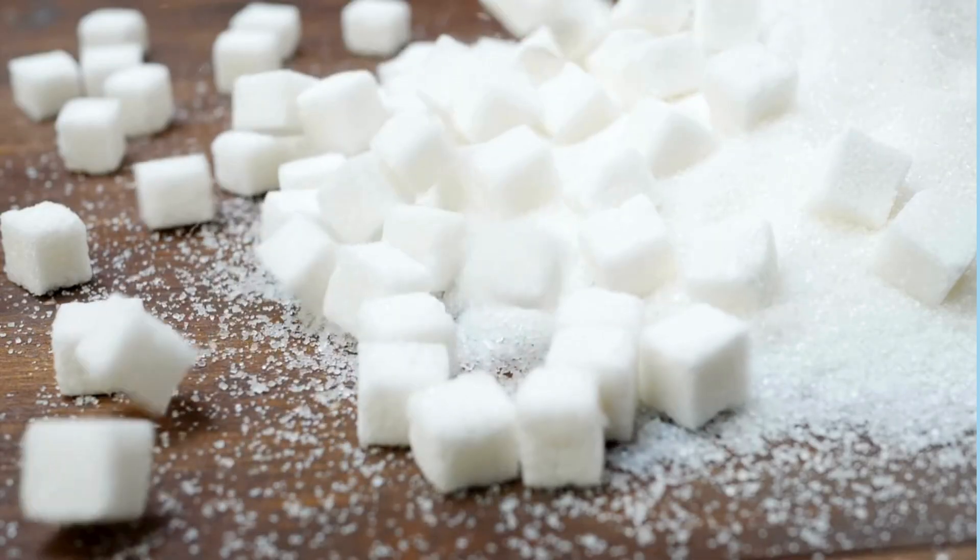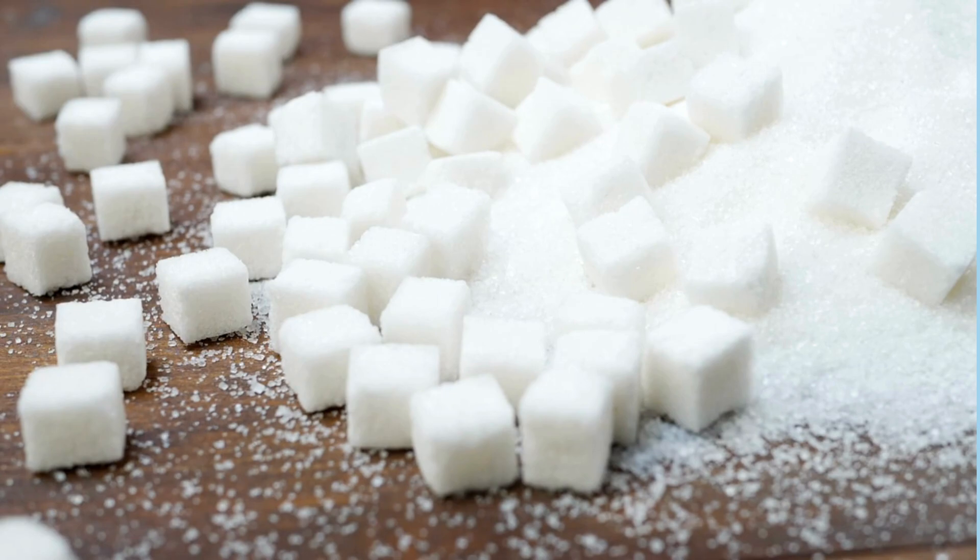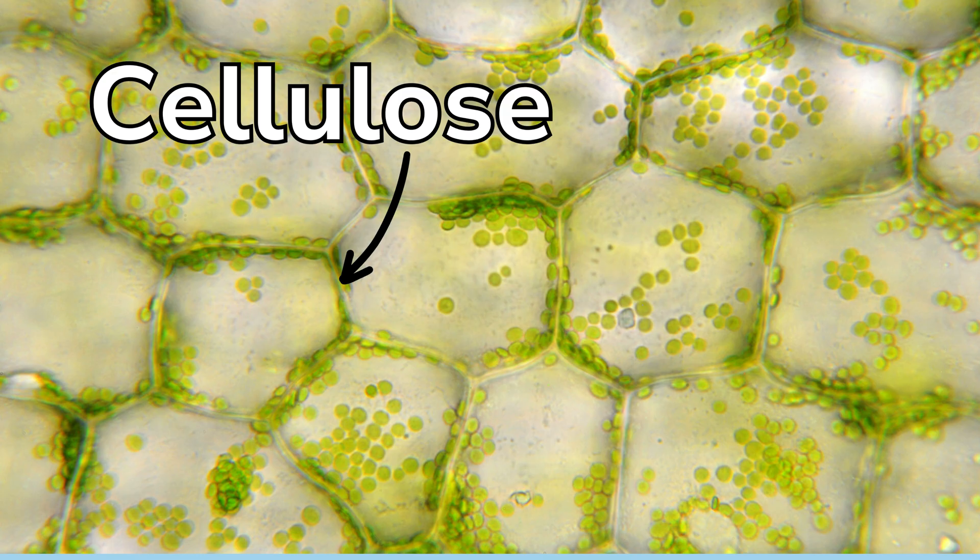Some of that sugar is used by the tree to provide energy. The rest is stored as starch. The glucose is used to provide a chemical called cellulose, which forms much of the structure of a plant. It's a major component in plant cell walls, for example.